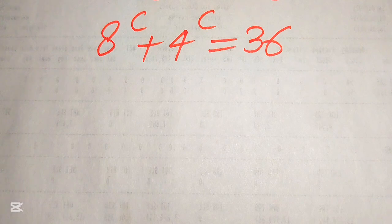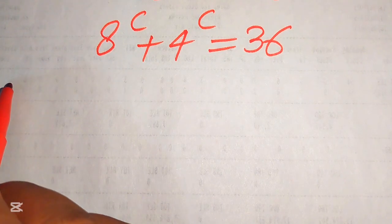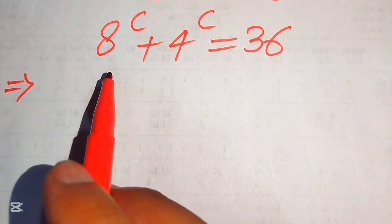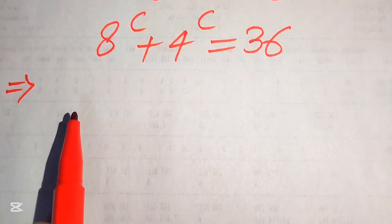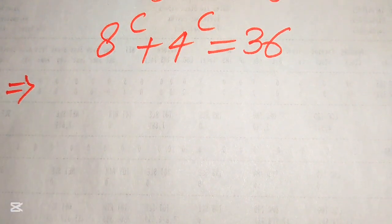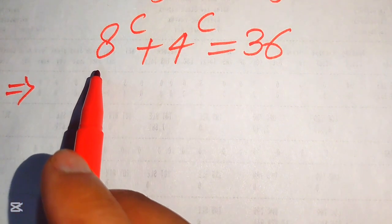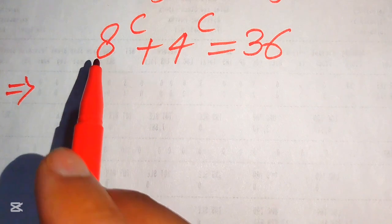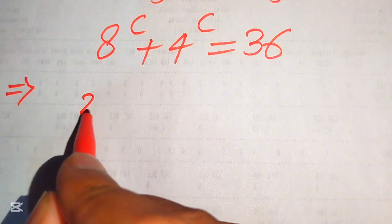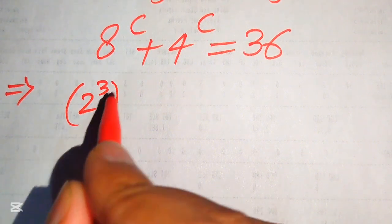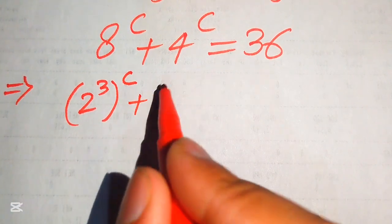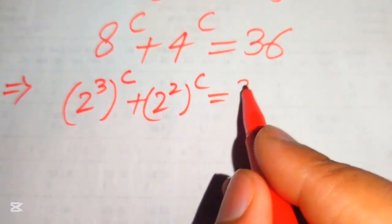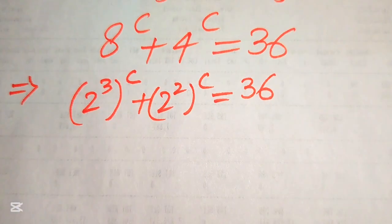The very first thing we are going to do is focus on the bases of this equation. This is an exponential equation and we convert it into simple polynomial form. We write 8 as its prime factors: 2 cubed, so we have (2³)^c plus we write 4 as 2 squared, so (2²)^c equals 36.